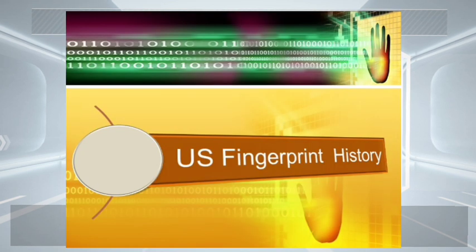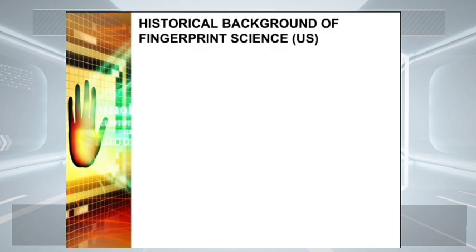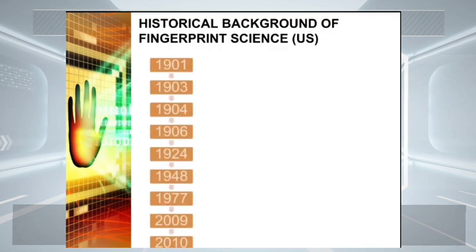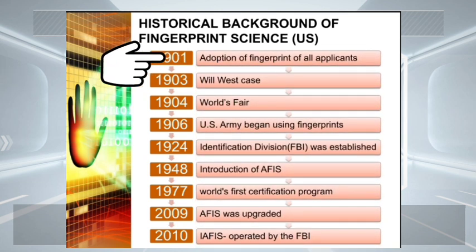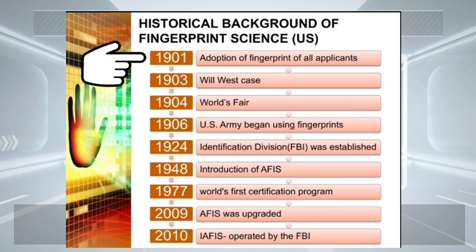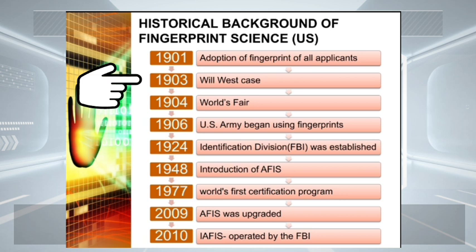Next is the historical background of fingerprint science in the United States. First, in 1901, the New York City Civil Service Commission adapted fingerprinting for personal identification of all applicants, and this is the first in the US. In 1903, there is the Will and William West case.